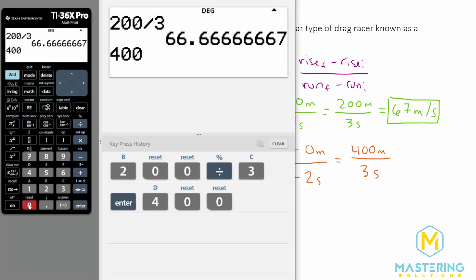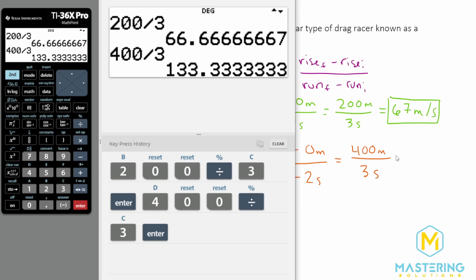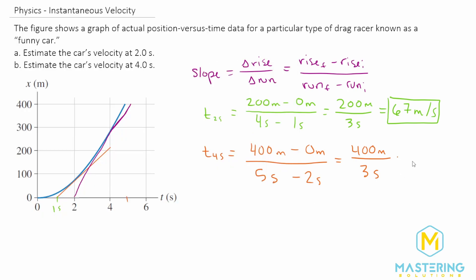So 400 divided by 3 gives us 133.33, and we'll round that to 130 meters per second. So that is the estimate for v at two seconds and v at four seconds.